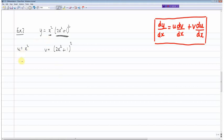And then as before I need du/dx so du/dx is equal to 2x. dv/dx here I'm just going to use the chain rule. Okay, and that gives me 8x(2x² + 1) like so.